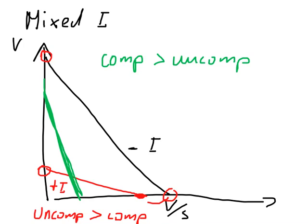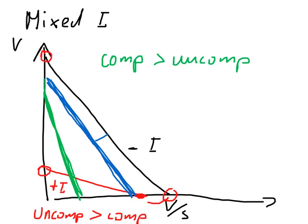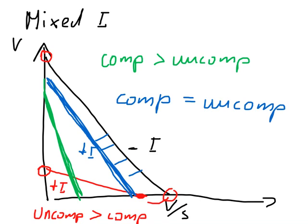Last but not least, a non-competitive inhibitor — where the only parameter that doesn't change is Km. In the Eadie-Hofstee plot, the with-inhibitor line is parallel to the without-inhibitor line. This is the case where the competitive component equals the uncompetitive component. The name 'non-competitive inhibitor' is very frequent in textbooks, but is really a special case of mixed inhibition and can be confusing and misleading.